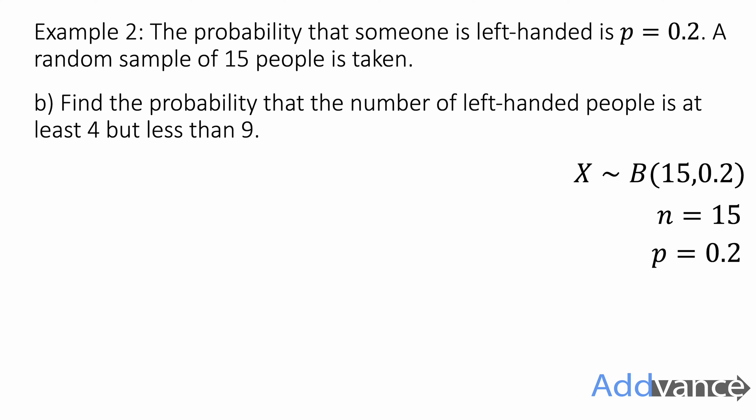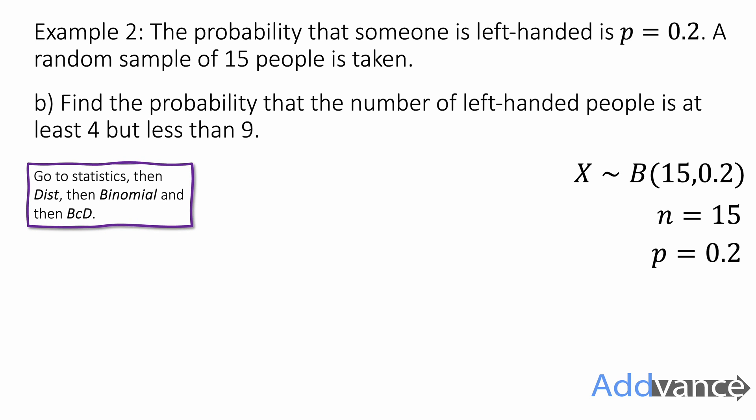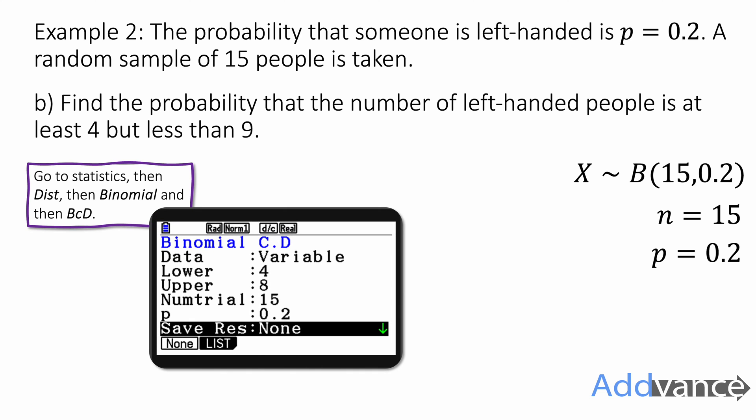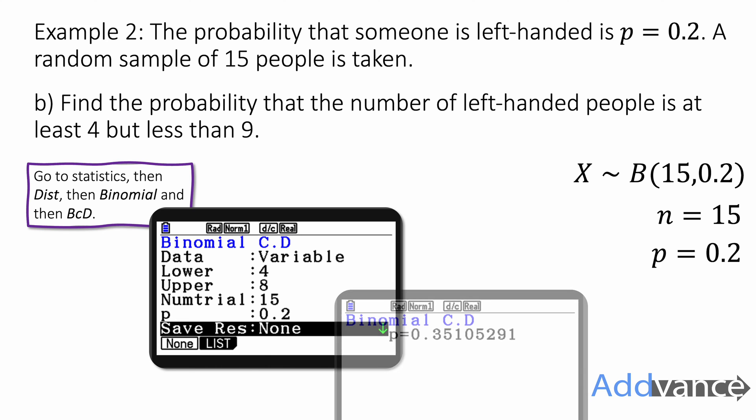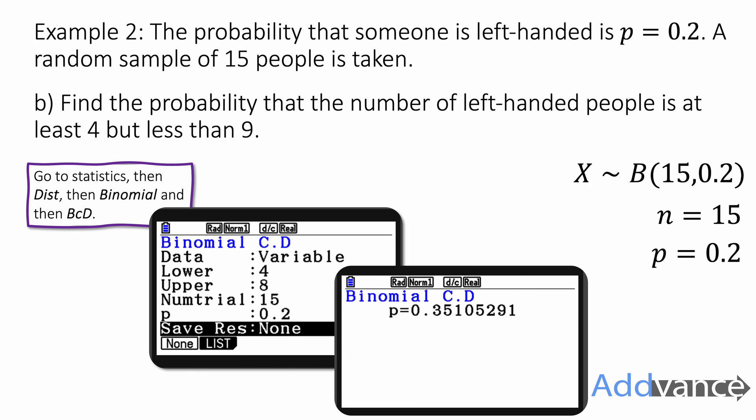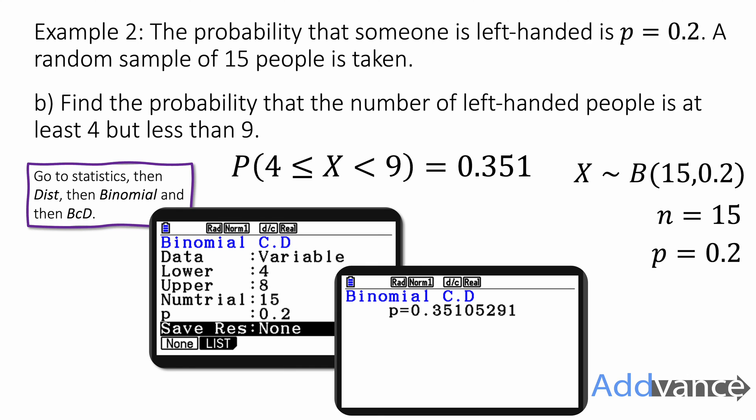For part B — find the probability that the number of left-handed people is at least 4 but less than 9. At least 4 means it can be equal to 4, but less than 9 means it cannot be 9, so the maximum is 8. The bounds are lower bound 4 and upper bound 8. Go to statistics, binomial, then BCD. Set lower bound to 4, upper bound to 8, number of trials to 15, probability to 0.2. Press exe and we get 0.351. So the probability that 4 is less than or equal to x is less than 9 is 0.351.